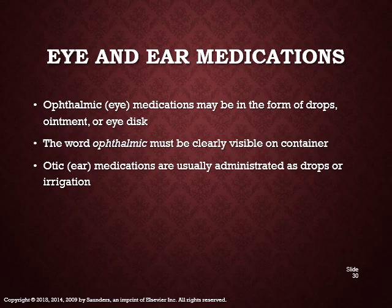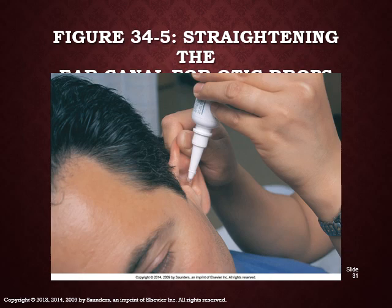When administering eye and ear medications: ophthalmic or eye medications may be in the form of drops, ointment, or eye disc — the word ophthalmic must be clearly visible on the container. Otic or ear medications are usually administered as drops or irrigations. Straightening the ear canal allows medication to be delivered more effectively. In adults, pull the pinna of the ear up and back. When administering to children, pull it down and back.